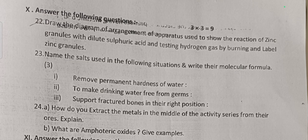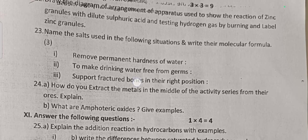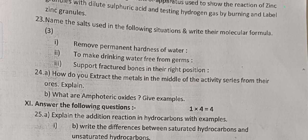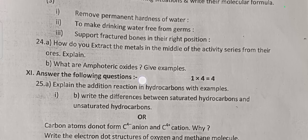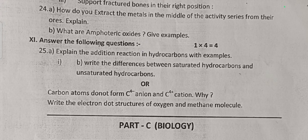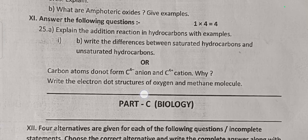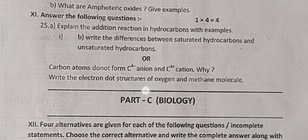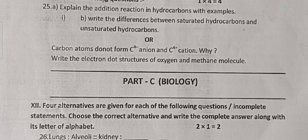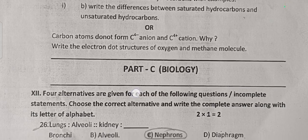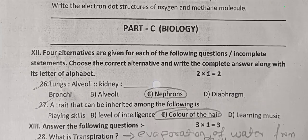Three-mark question: Draw a labelled diagram of the arrangement of apparatus used to show the reaction of zinc granules with dilute sulfuric acid and testing hydrogen gas by burning — this is from your textbook diagram. Question 23: Name the salt used in the following situations — remove permanent hardness of water, make drinking water free from germs, support fractured bones in the right position. Question 24: How do we extract metals in the middle of the activity series? Or: explain what amphoteric oxides are with examples. Four-mark question: Explain the addition reaction of hydrocarbons with an example, write the differences between saturated and unsaturated hydrocarbons. Or: why do carbon atoms not form C4− anions and C4+ cations? Write the electron dot structure of oxygen and methane molecules.